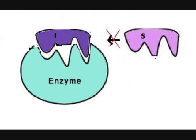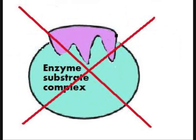Enzyme, you're not in your prime, and there's a competitive inhibitor doing its crime of getting in the way of the active site. Reduces chance of forming a complex, alright.